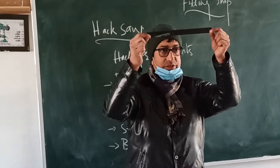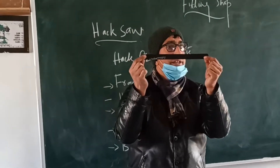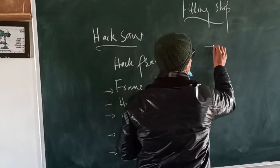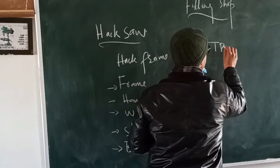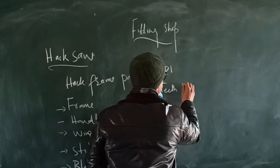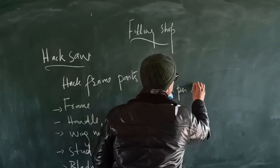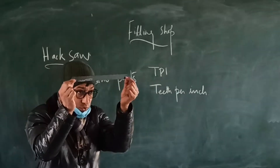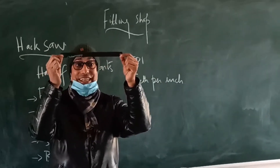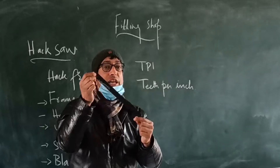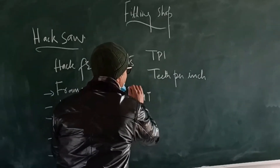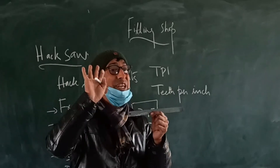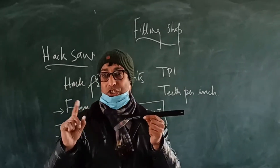Let's start with the blade. The blade is the important parameter — Teeth Per Inch (TPI). For this blade which we use, how many teeth per inch are there? So 24 teeth per inch is one category.